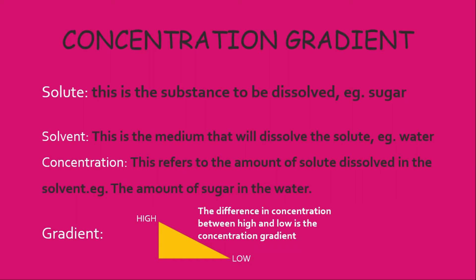You might have heard the term grade, hill, or incline. Here we have a triangle showing a slope: at the top we have high, and at the bottom we have low. Between those two areas — high and low — is where we find our concentration gradient. Simply put, it is from a place where we have a lot of the particles to a place where we have less.